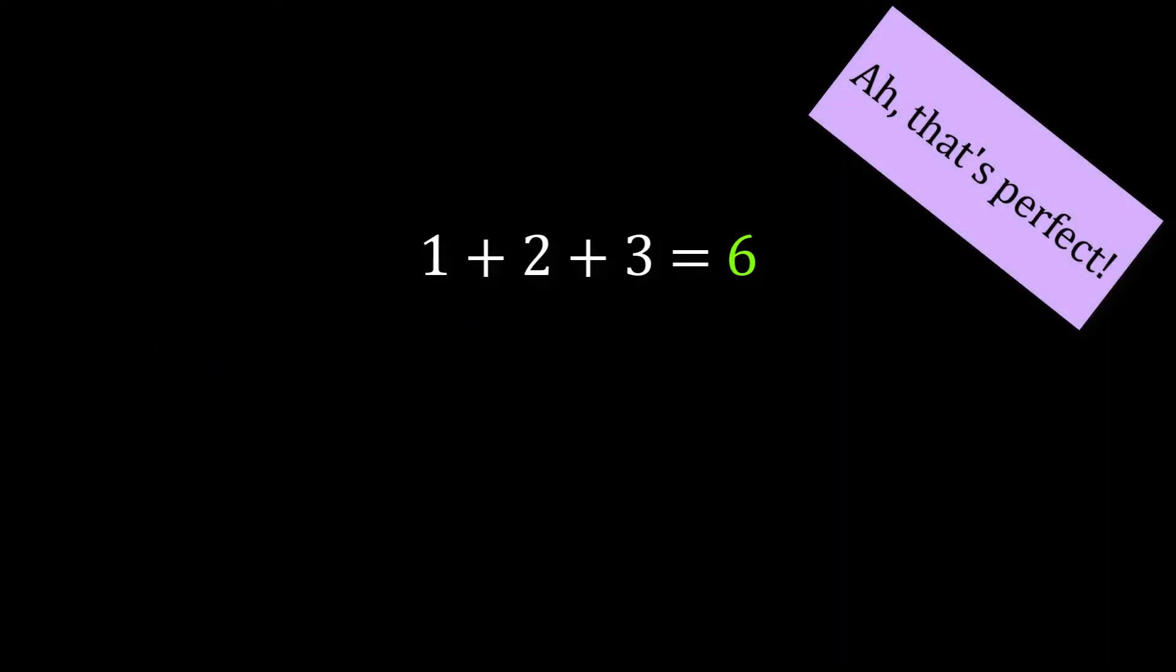If a number equals the sum of its divisors, it's called a perfect number. The first is 6.